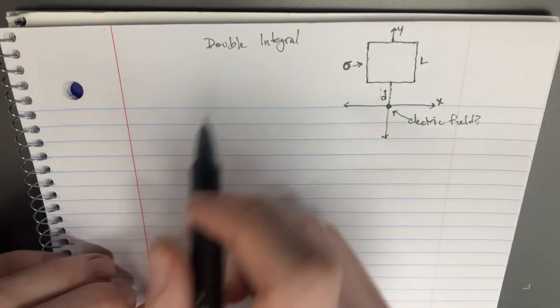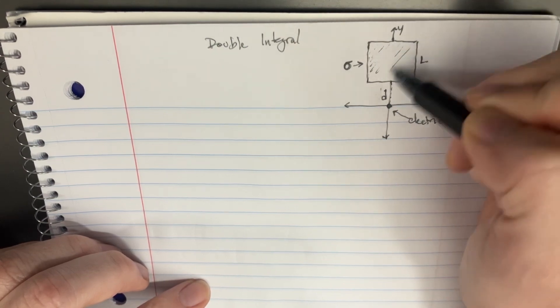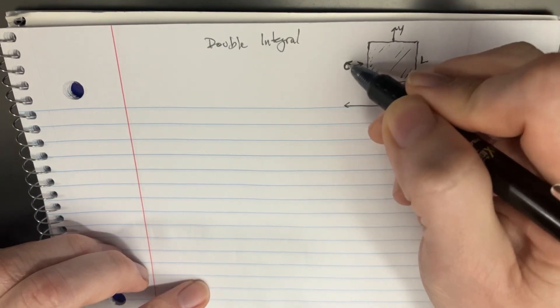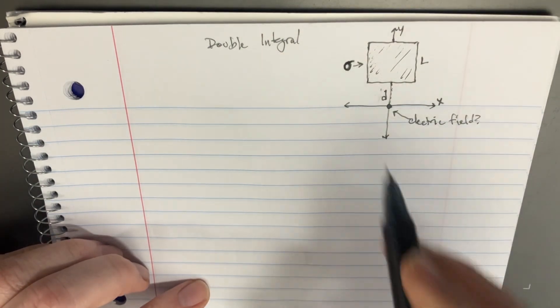So in this problem, we're trying to solve a double integral. We've got this charged area here, instead of a single charged line, it's an area, giving us this type of density here, charge density.